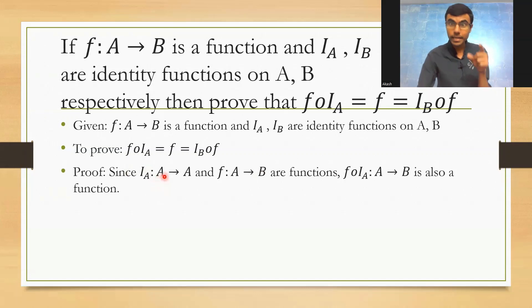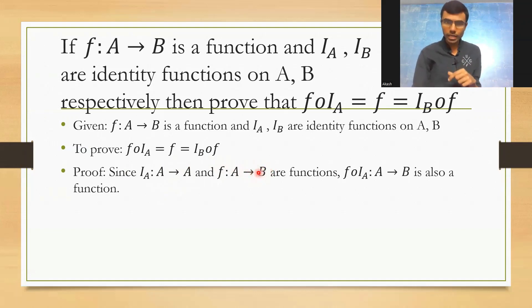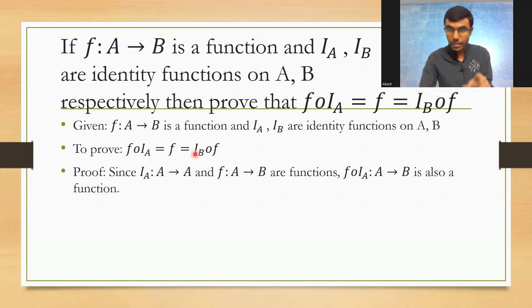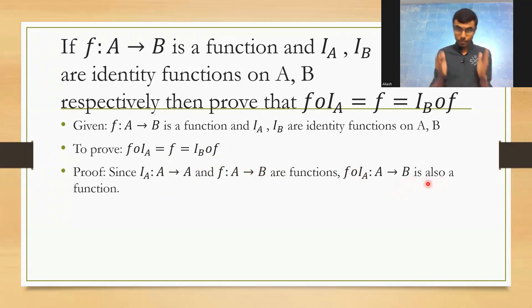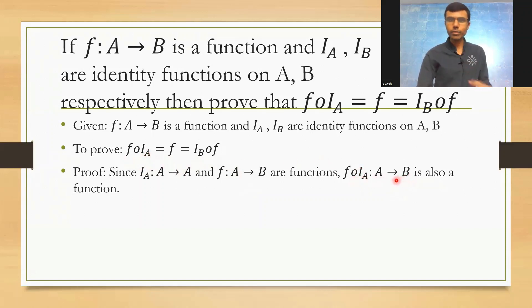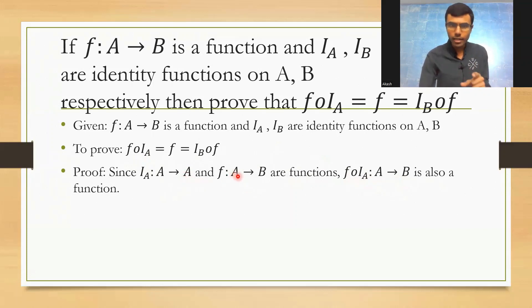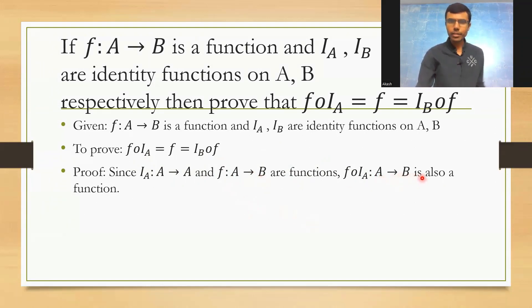iₐ goes from A to A, and f goes from A to B. So A→A, and this A becomes the input to f, which then maps to B. So ultimately f∘iₐ maps A to B and is also a function. This is why it maps A to B and not B to A — iₐ goes A to A, and then A to B, so overall A to B.